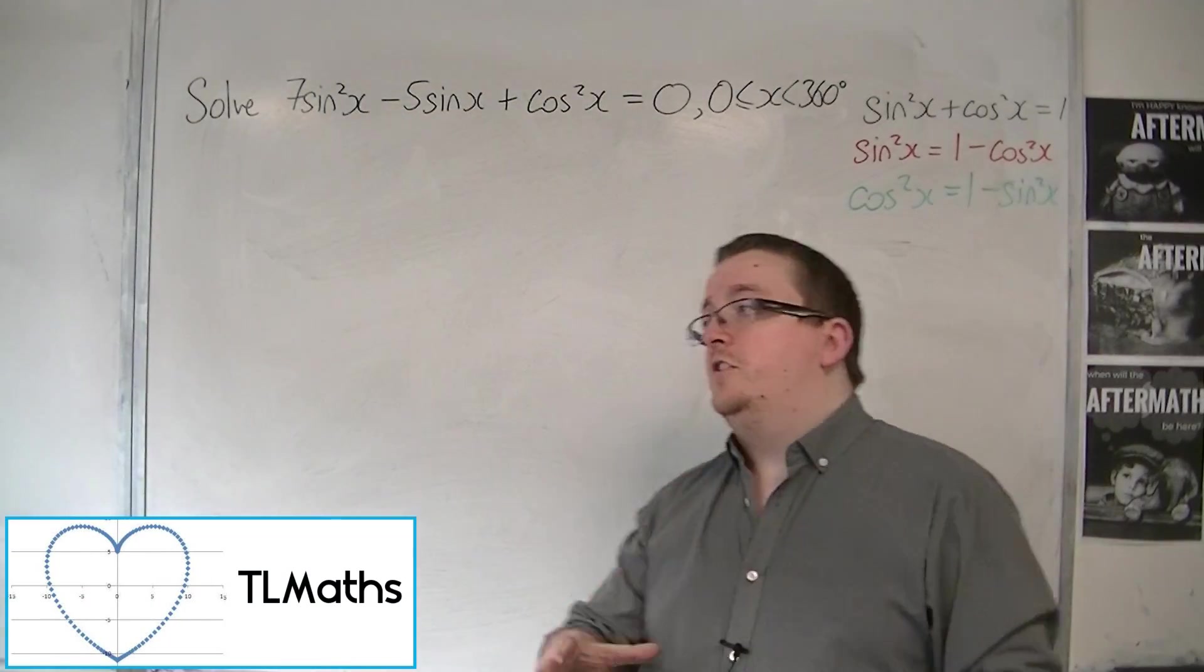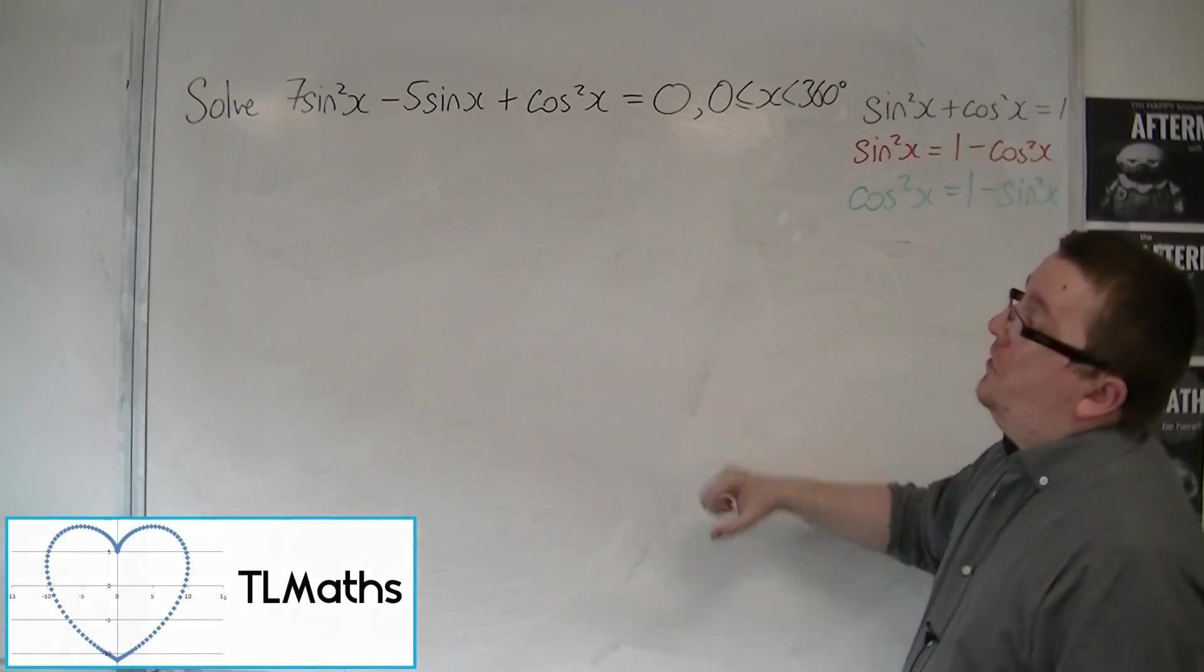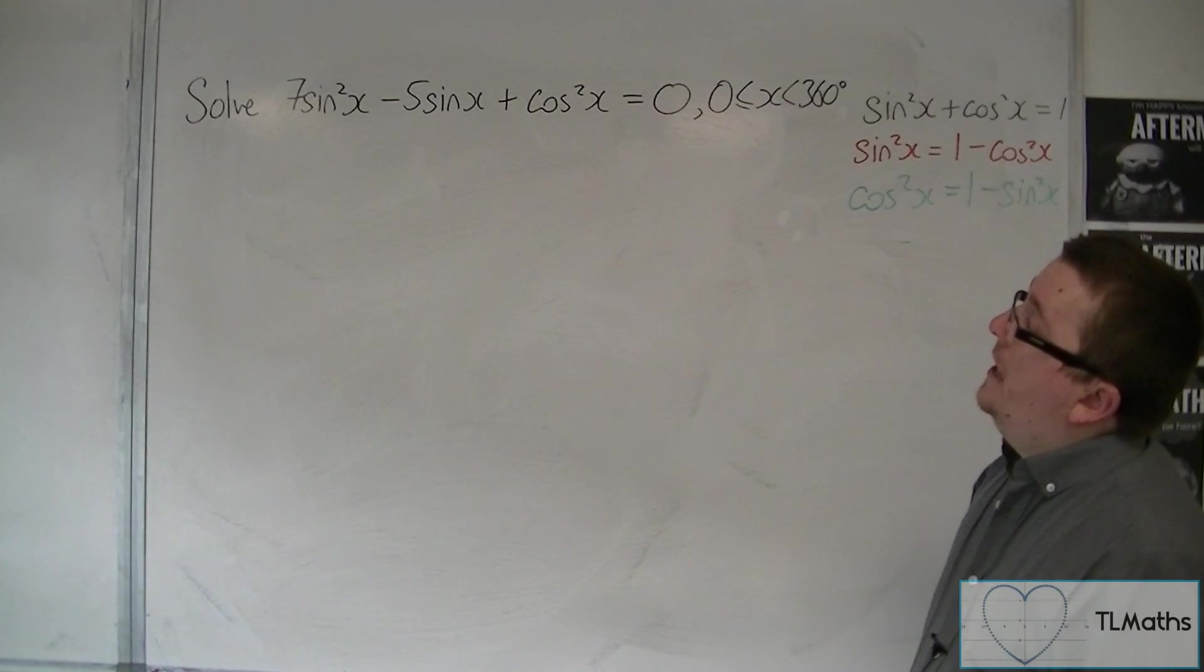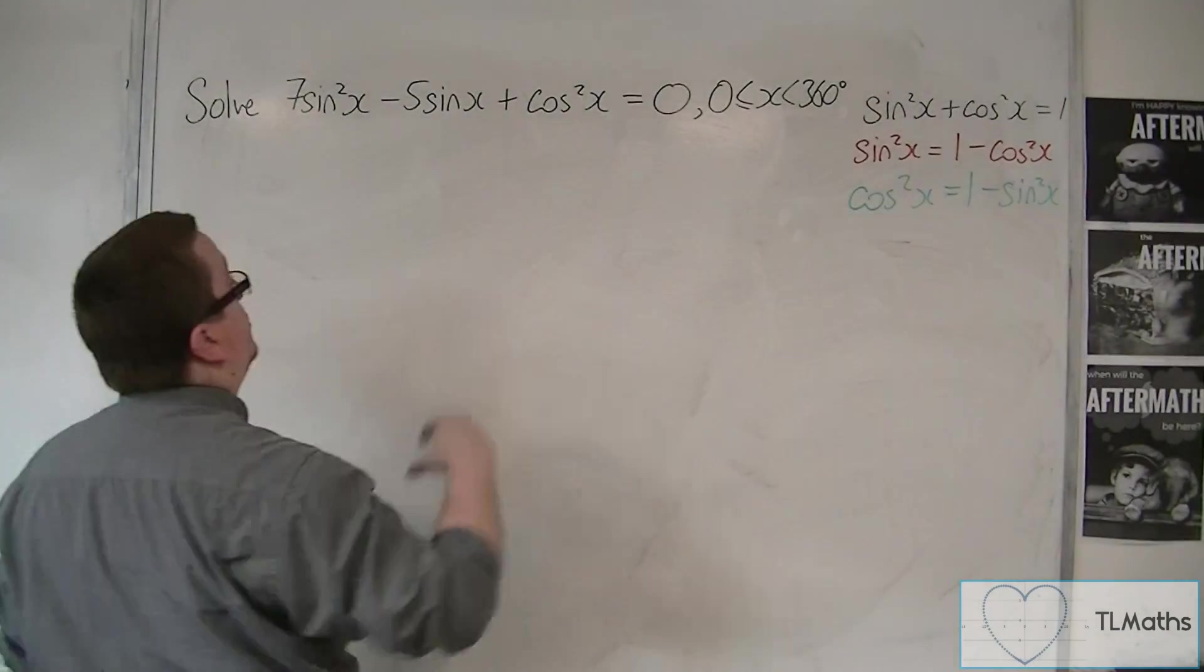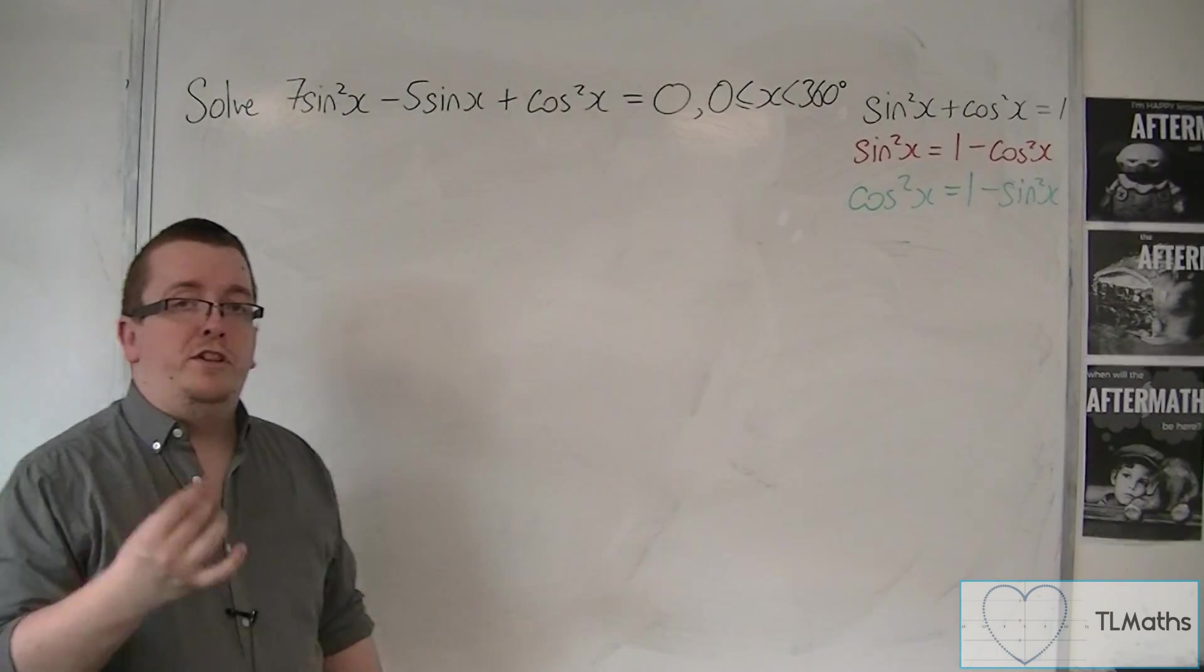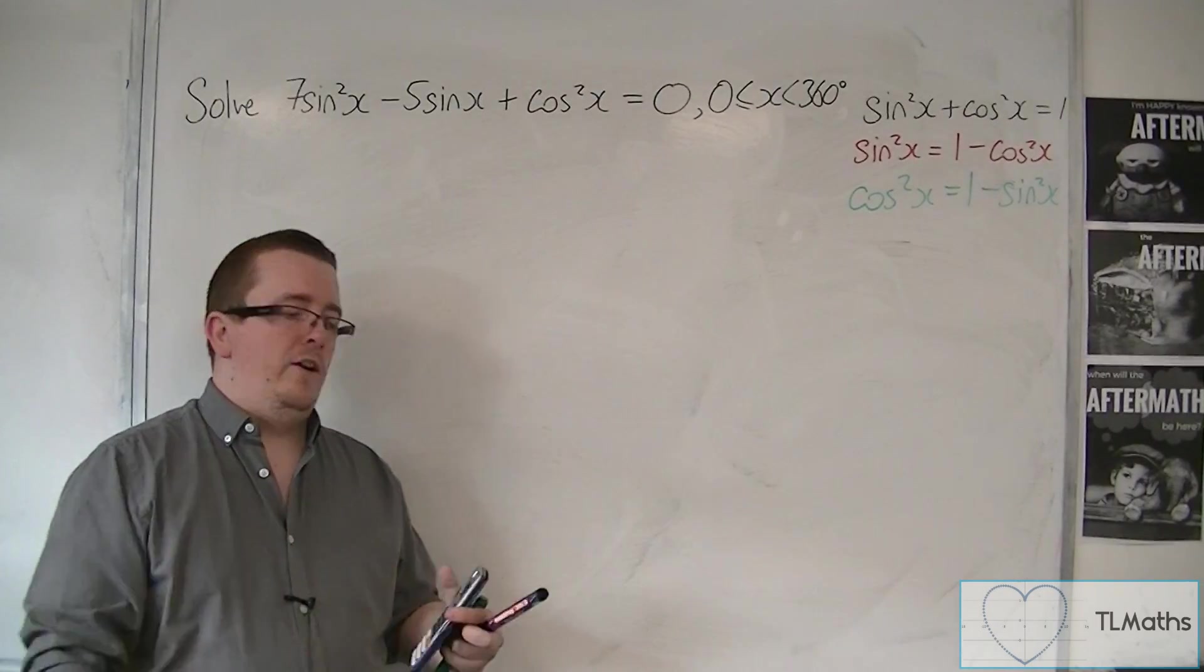In this video, we're going to solve 7sin²x - 5sinx + cos²x = 0 between 0 and 360 degrees, so make sure your calculator's in degrees.